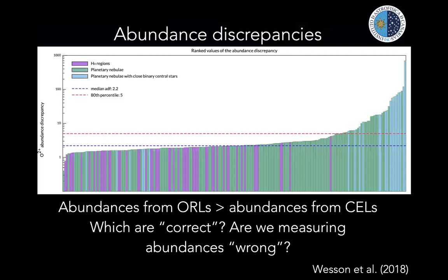Binarity cannot be the cause of all abundance discrepancies, since HII regions are not all around binaries. But clearly something with a binary origin is driving these very high abundance discrepancies. Unlocking this is a critical question: if we can only measure collisionally excited line abundances for the majority of ionized nebulae and use those to probe the chemical abundances of galaxies, are we really measuring the right abundances?